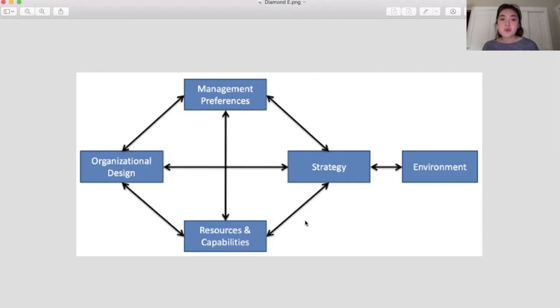Just a few more points on the Diamond E Framework. The premise of the framework is that you want to achieve alignment between each component. Alignment, according to this framework, leads to a successful business, while inconsistencies result in poor performance. Therefore, a strong strategy, for example, needs to be aligned with both environmental opportunities and challenges, as well as internal capabilities, design, and preferences.